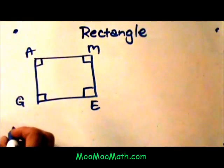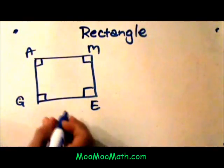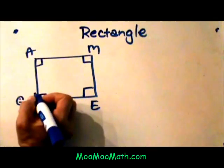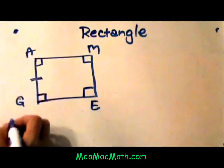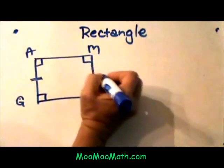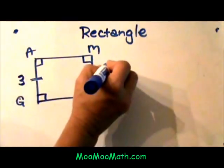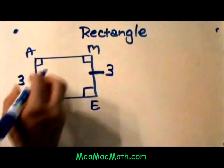Let's mark up the diagram to represent all those properties. The opposite sides are congruent, so GA and EM have the same length, and I'll put numbers there. This side is 3 and that side is 3.